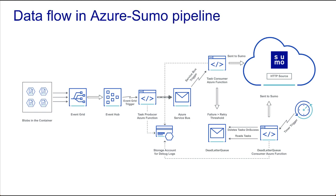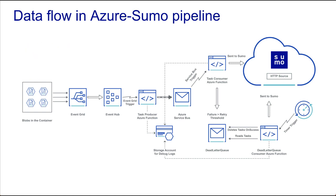Let's now see how the various components are stitched together in the pipeline. Azure services send the monitoring data, such as logs and metrics, to Azure Blob containers in a storage account. An event subscription is configured with an Azure Blob container as the publisher and an event hub as the subscriber. The event grid then routes all of the create block events to the event hub.